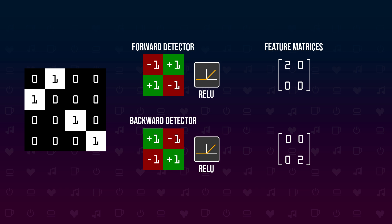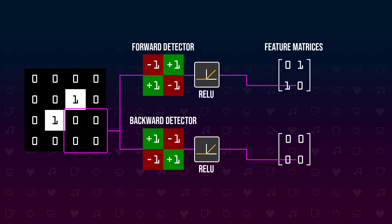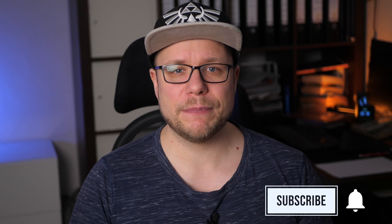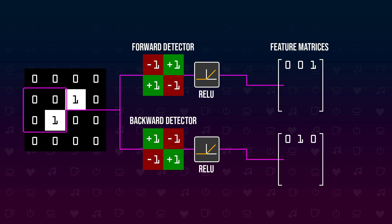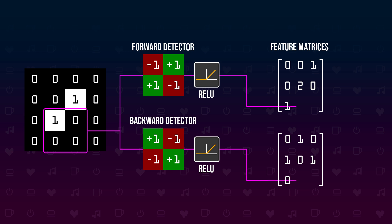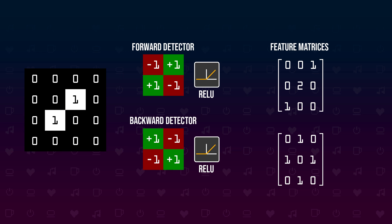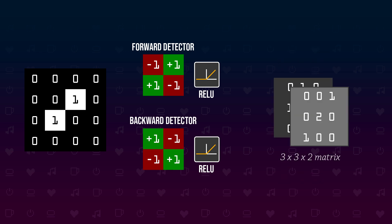But what happens if a forward slash is exactly in the middle? Now our forward slash detector is not really sure if it is a forward slash — we only get an activation value of one for two of the quadrants. So we need a better way. Instead of simply applying our filters to the four quadrants, we can use a sliding window going over the image detecting forward and backward slashes everywhere. Now we get a 3x3 feature map as a result for each filter, and the output of our filters is a 3x3x2 three-dimensional matrix — a new feature map. This process is called convolution, and neural networks that use this technique are called convolutional neural networks.